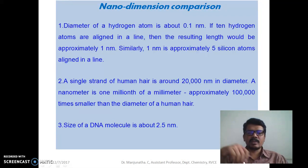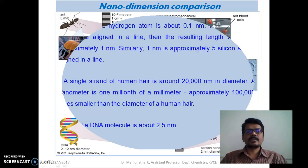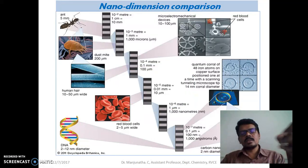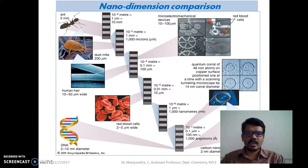A nanometer is one millionth of a millimeter, or approximately 100,000 times smaller than the diameter of human hair. And the size of DNA is about 2.5 nanometer. And this is just a comparison of the nanometer and the micrometer and macrometer scale.